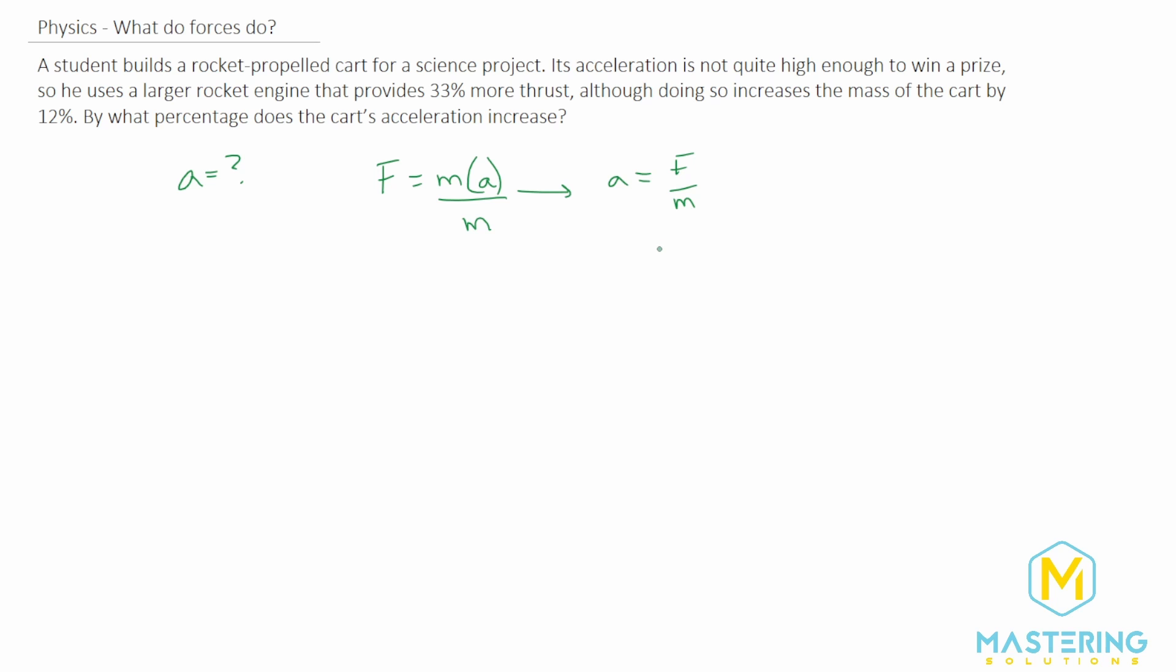Now when we're talking about this we need 33% more thrust, but if we had the exact same thrust we would say that it is 100% of the original thrust, right? But in this case we want 33% more. So we want a hundred percent plus 33%. So another way of saying that is obviously 133%.